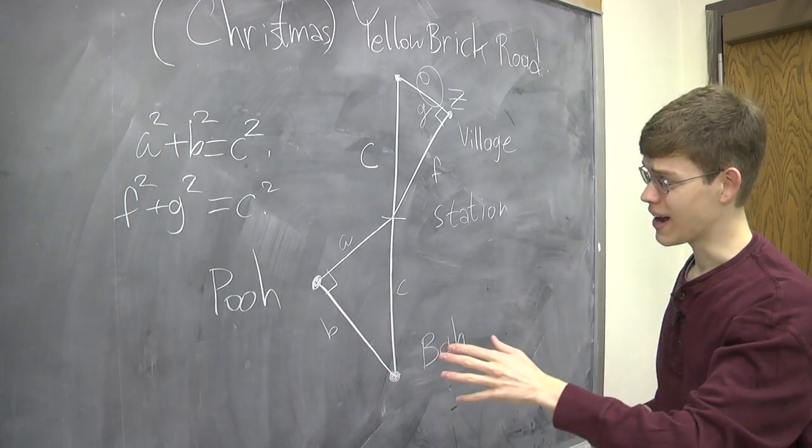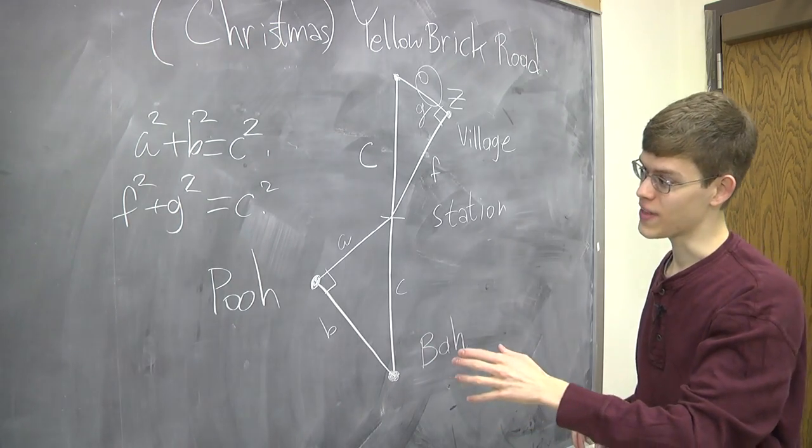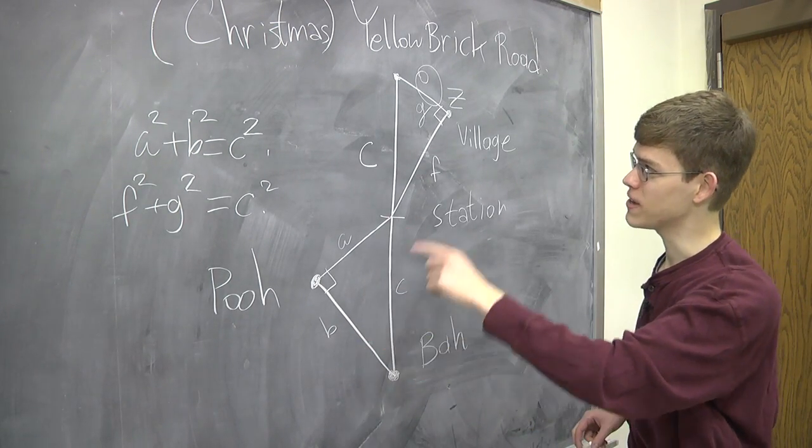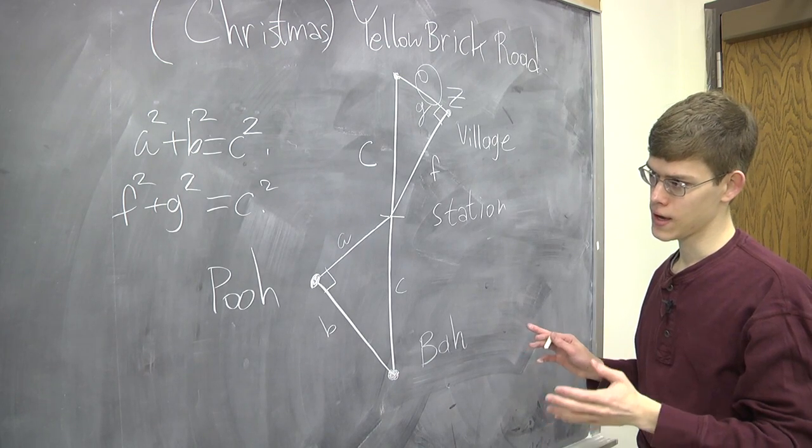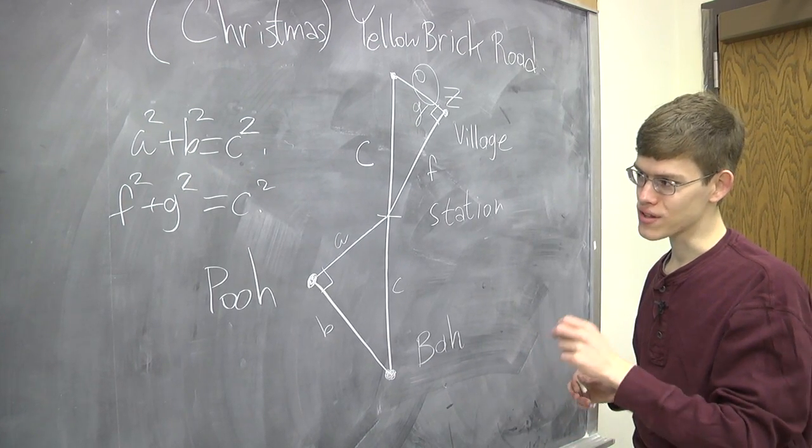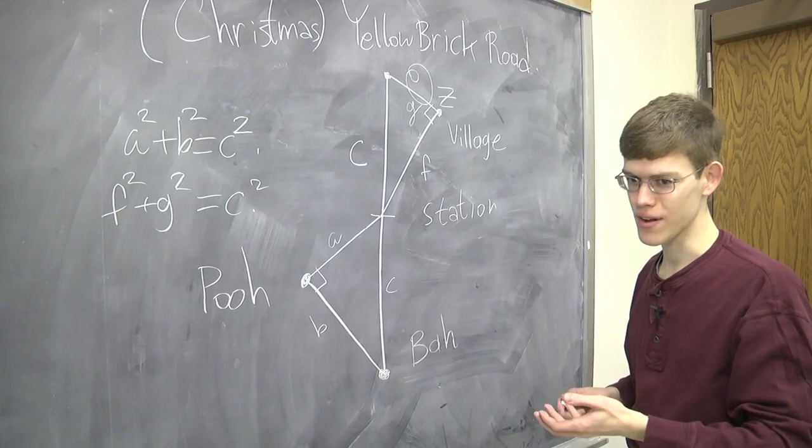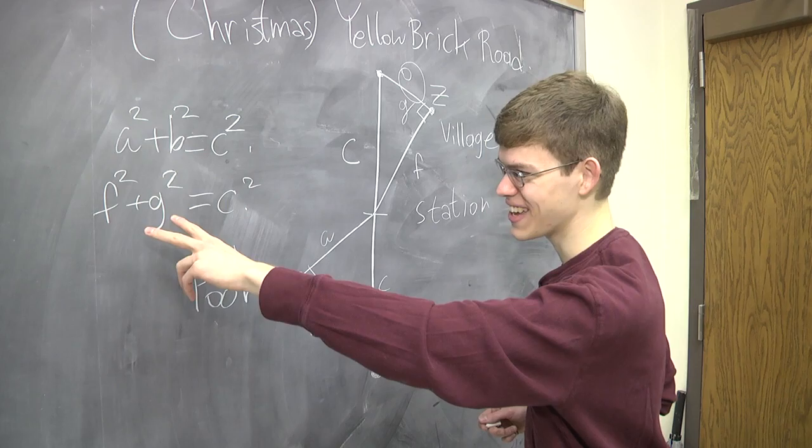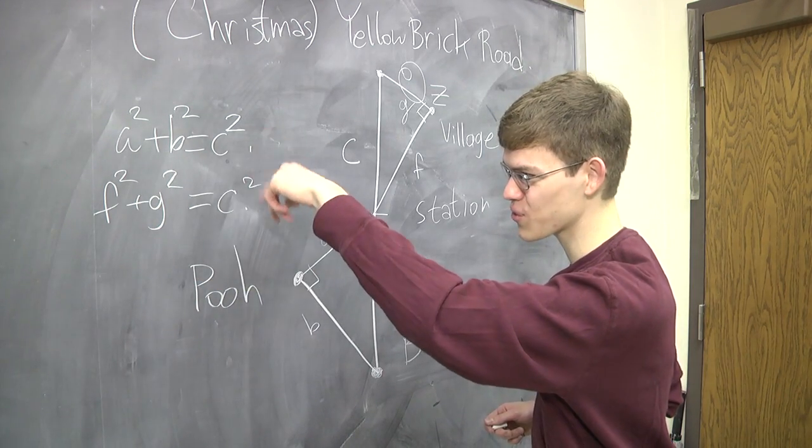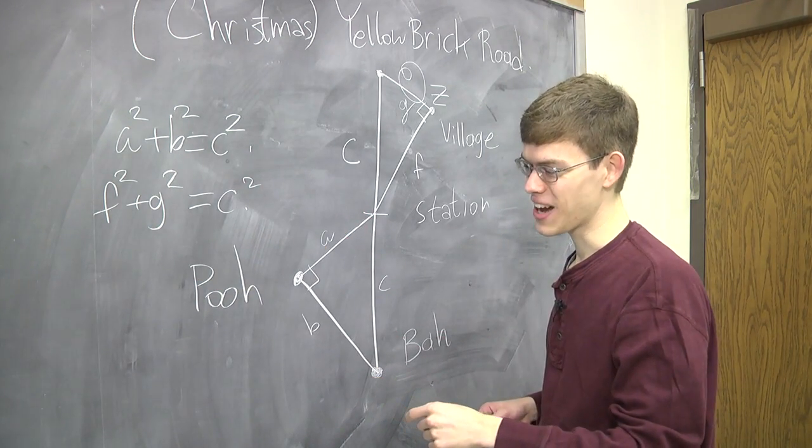And we also require, I didn't mention this before, that all these numbers A, B, F, and G, they're all different. So what's the smallest C that makes all of this work? It's not clear. Are there any numbers you can think of that can be written as a sum of two squares in two different ways that are themselves squares? It's not obvious.